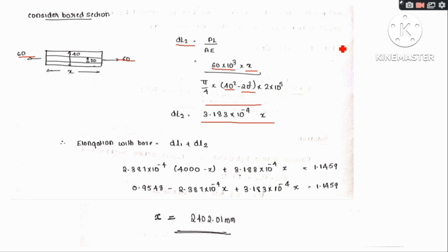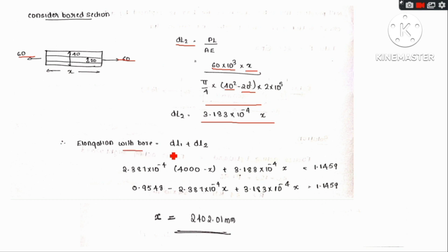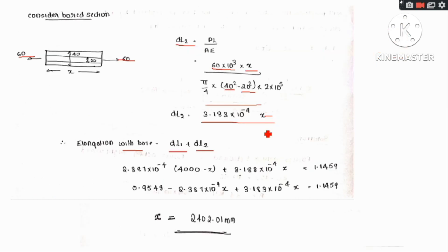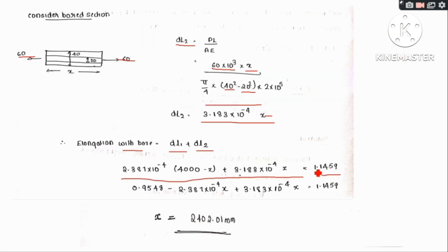Total elongation with bore equals delta L1 plus delta L2. Setting this equal to 1.1459 mm and substituting values for both sections, we solve for x, the unknown bore length. The solution gives the required bore length in meters.